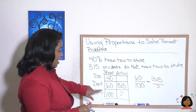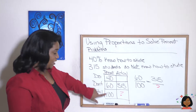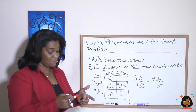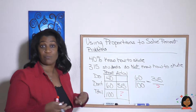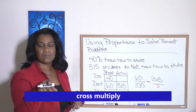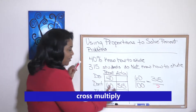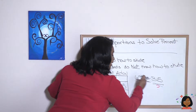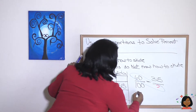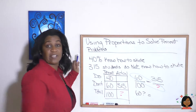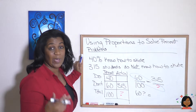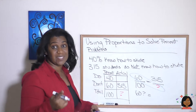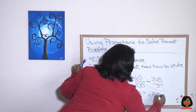Let's do that again. I use the row that I have: 60 over 100, and then 315 over question mark. To find the missing number in a proportion, we cross multiply. So 60 times question mark equals 315 times 100. Any time you multiply by a factor of 10, all you do is add the number of zeros, so that gives us 31,500.